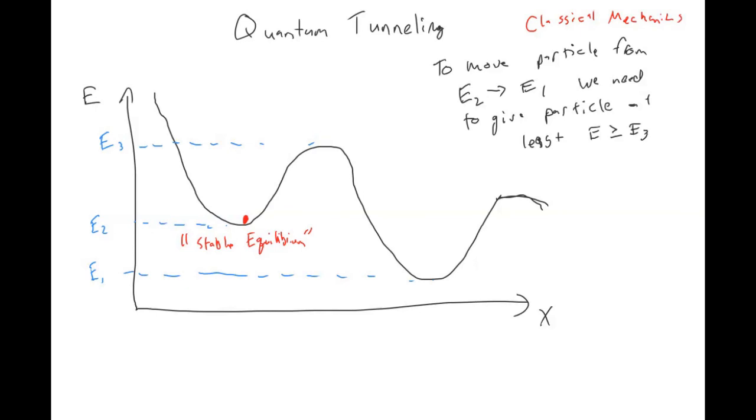In quantum systems, however, we observe quantum tunneling. What can happen if, for example, this delta x, or the distance between these two points is very small? What we can see is basically the particle tunneling through this potential barrier and basically spontaneously appearing in this lower energy state.